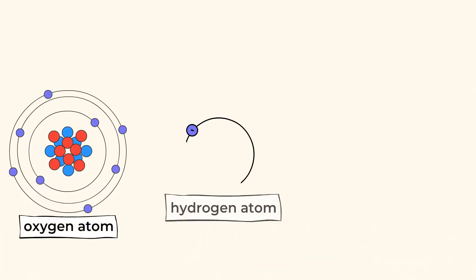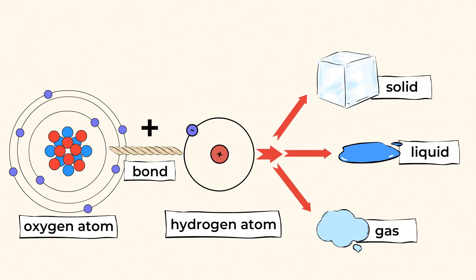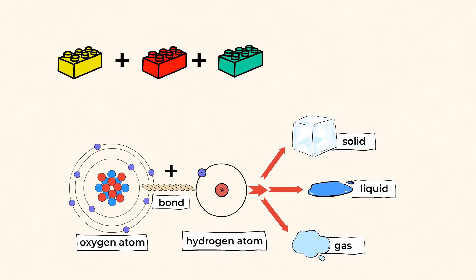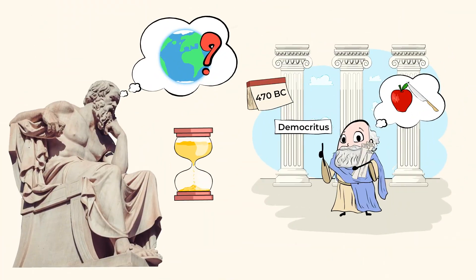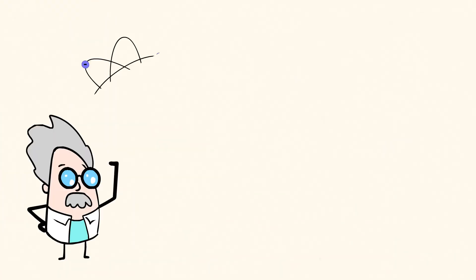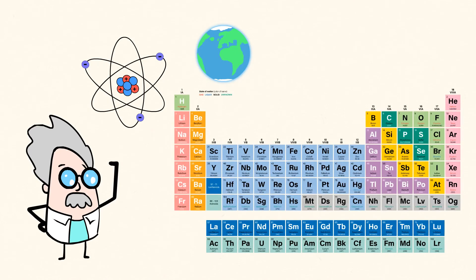The beauty of atoms is that they can bond to form solids, liquids, and gases. You can think of atoms as being like Lego blocks — you can join them together in many different ways in order to build different things. Atoms can be arranged and rearranged in order to create new substances. It's amazing to think that the concept of atoms was being explored thousands of years ago. Today, scientists are able to use the knowledge of atoms to explore our world in incredible ways.